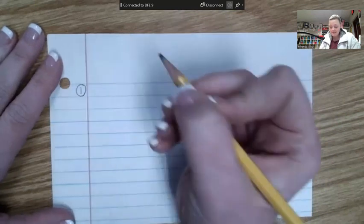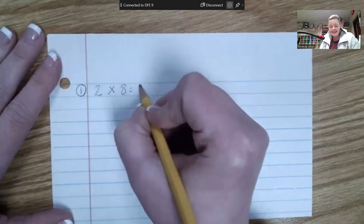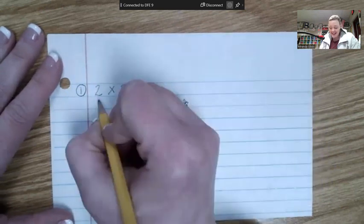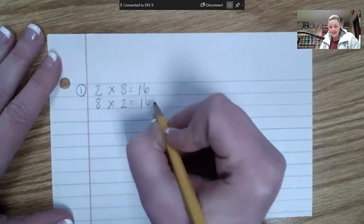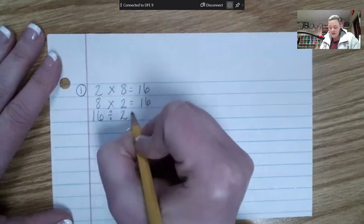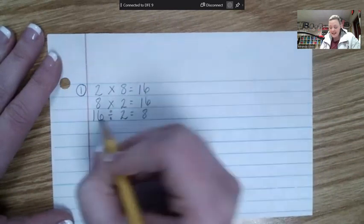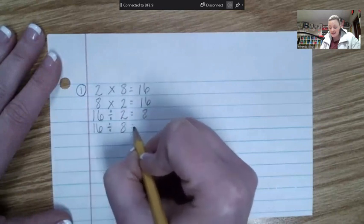Number 1. 2 times 8 is 16. 8 times 2 is 16. 16 divided by 2 is 8 and 16 divided by 8 is 2.